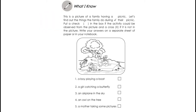What I Know. This is a picture of a family having a picnic. Let's find out the things the family do during their picnic. Put a check in the box if the activity could be observed from the picture, and a cross or X if it is not in the picture. Write your answer here in the module.